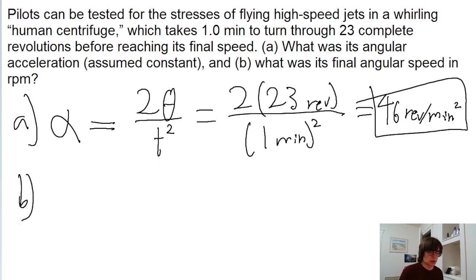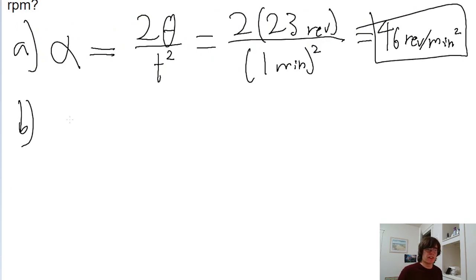Now for part b. If we're assuming that the angular acceleration is constant, which it is in this case, the angular displacement can be found by this formula where the displacement is one half of the sum of the initial and final angular speeds multiplied by the time interval.